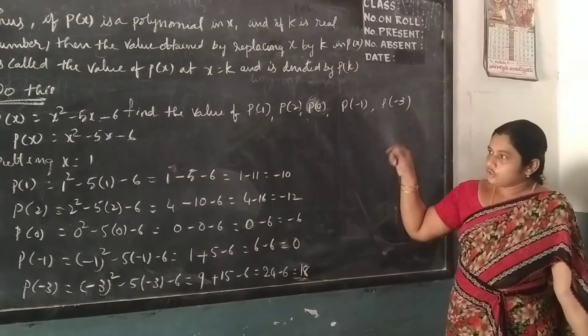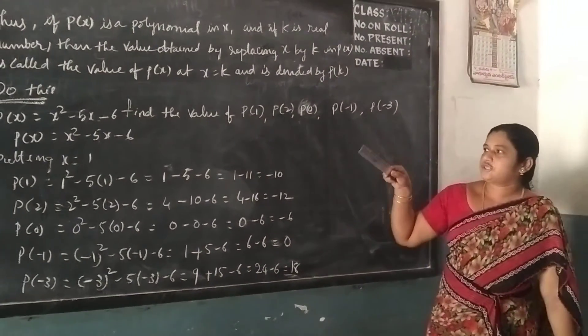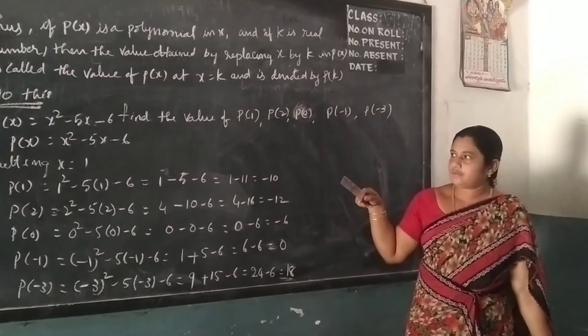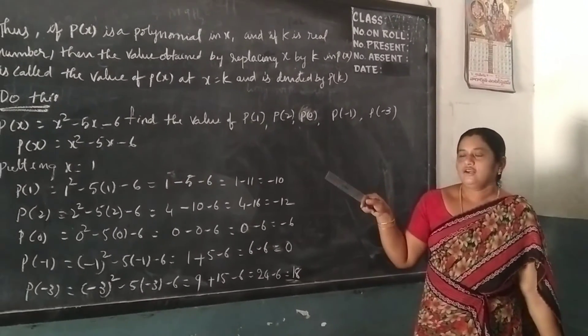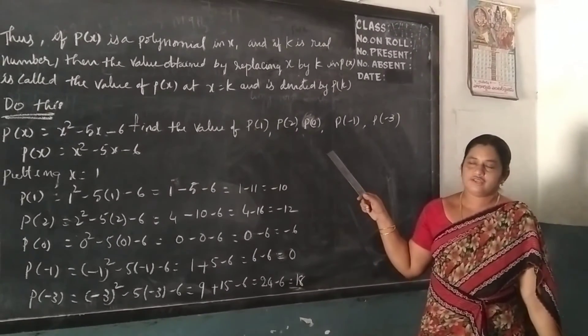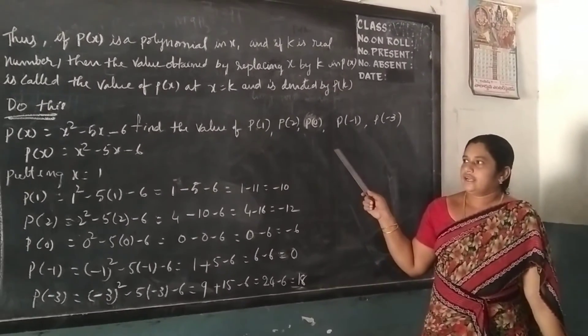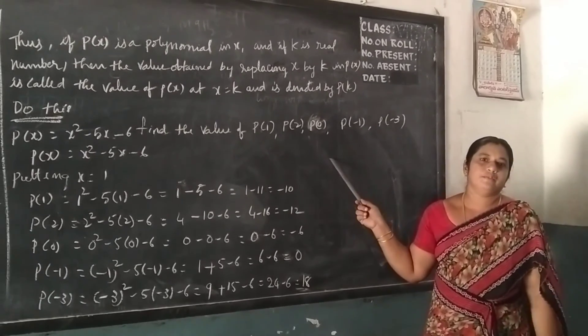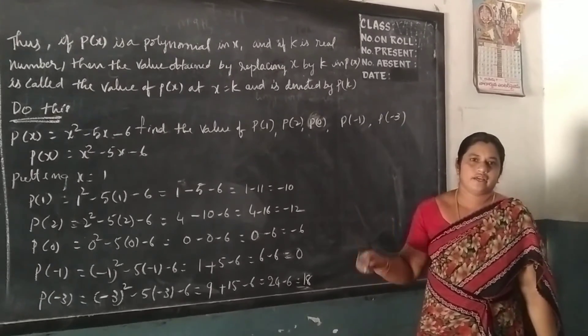This is the first problem — do this in your textbook. There is a second problem as well. Do the homework, children. Tomorrow we will continue with the zeros of the polynomial. Thank you.